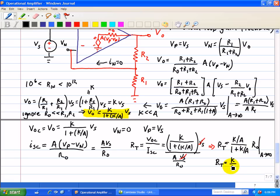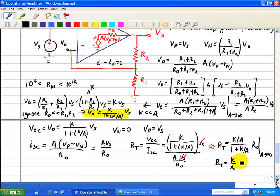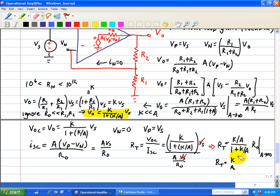K over A times RO. Or this is approximately equal to 0 ohms.